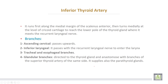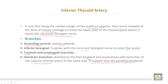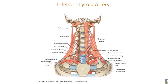The inferior thyroid artery traverses along the medial margin of the scalenus anterior muscle, then turns medially at the level of the cricoid cartilage to reach the lower pole of the thyroid gland, where it meets the recurrent laryngeal nerve. Branches of the inferior thyroid artery: (1) ascending cervical branch, passing upward; (2) inferior laryngeal branch, passing with the recurrent laryngeal nerve to enter the larynx; (3) tracheal and esophageal branches; (4) glandular branches directed to the thyroid gland, anastomosing with branches of the superior thyroid artery of the same side; and it also supplies the parathyroid glands.